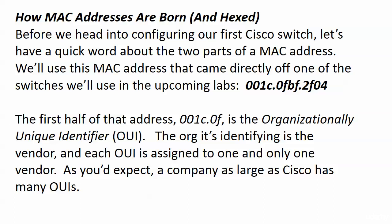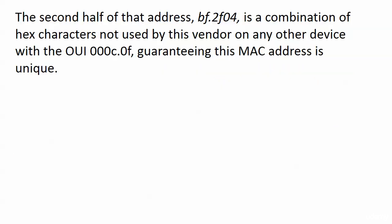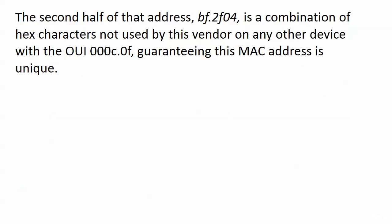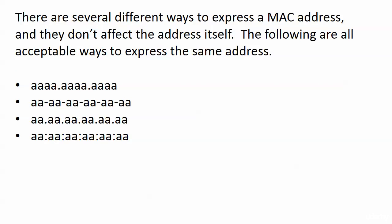You can actually look at a device's MAC address and determine what vendor made it, though you don't need to do that on the test — you just need to know what the OUI is. The second half of the address — BF:2F:04 in this case — is a combination of hex characters not used by this vendor on any other device with this particular OUI. That guarantees the MAC address is globally unique.